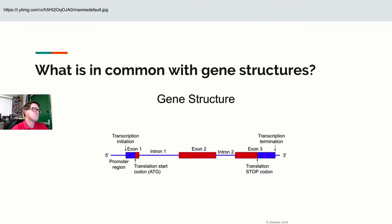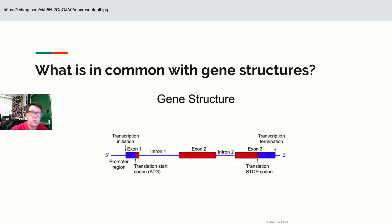If I look at a gene, regardless of what the gene is, there are a few pieces in common: a starting point, which we call initiation or the TATA box; the structural gene itself; a stopping point to say stop transcribing this gene; and some regulatory sections that help turn the gene on or off.